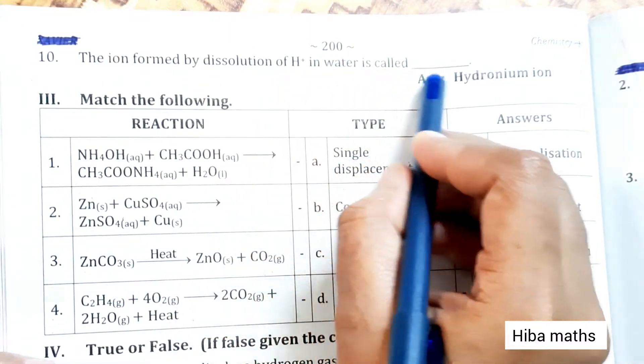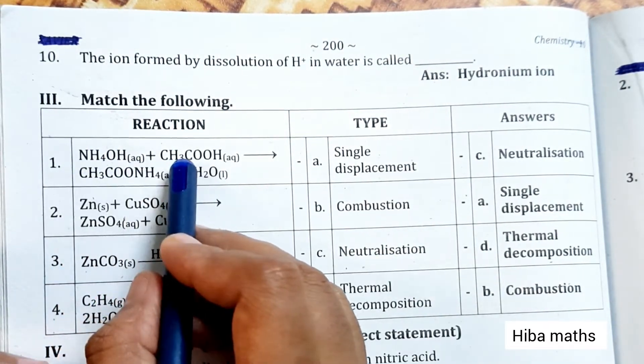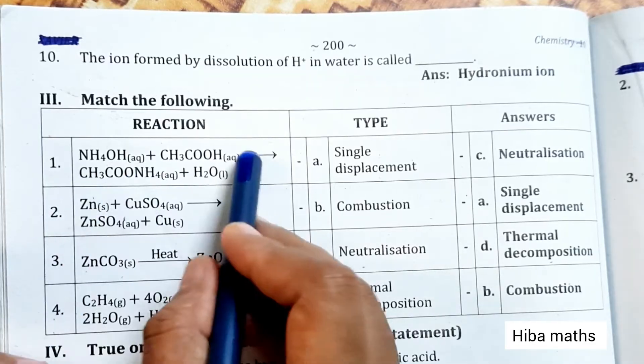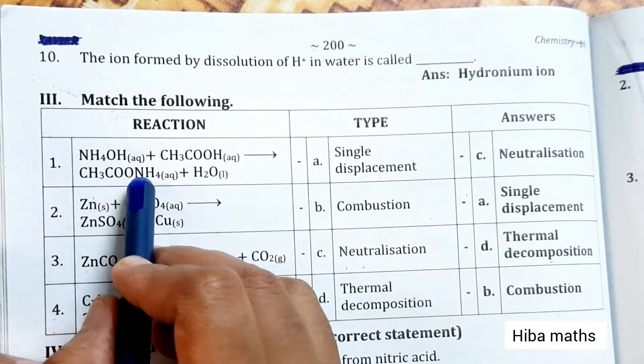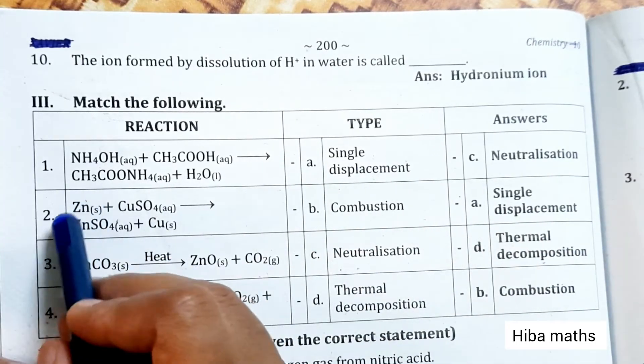Match the following: NaOH plus CH3COOH gives CH3COONa plus H2O - neutralization reaction. Zn plus CuSO4 gives ZnSO4 plus Cu - single displacement.